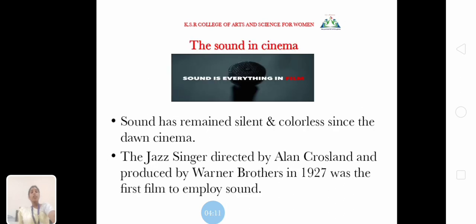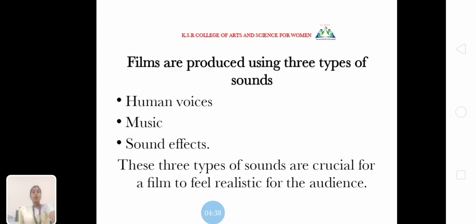What is sound in cinema? Sound is everything in film. Sound remained silent and colourless since the dawn of cinema. The Jazz Singer, directed by Alan Crosland and produced by Warner Brothers in 1927, was the first film to employ sound. The three types of sound are: human voices, music, and sound effects. These three types of sound are very important for a film to feel realistic for the audience.